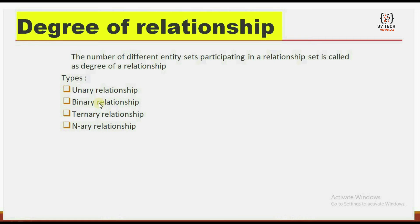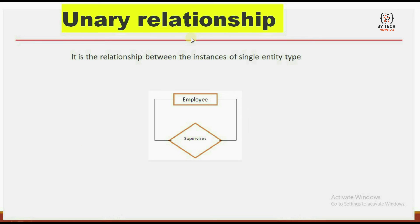The four types are: unary relationship, binary relationship, ternary relationship, and n-ary relationship. Unary relationship: it is the relationship between the instances of a single entity type.